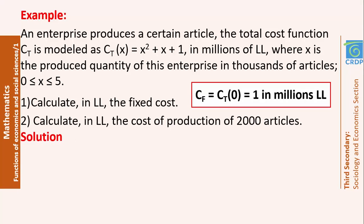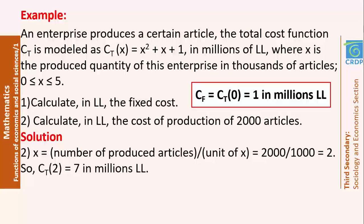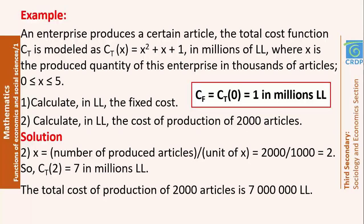In number 2, calculate in Lebanese lira the cost of production of 2,000 articles. You might think to replace x by 2,000, but you have to be very careful — x is a number between 0 and 5, with a unit of thousands of articles. So when I say 2,000 articles, the corresponding x is 2. To find x, divide the number of articles by the unit of x. Replacing x by 2 in the total cost function gives 7 million Lebanese lira — the total cost of production of 2,000 articles.